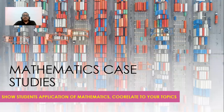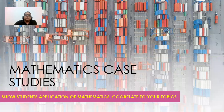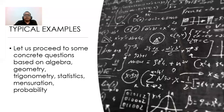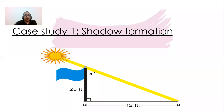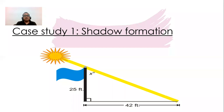Case studies are very important. I have prepared these especially for class 10 — any concept can be introduced through a case study. For example: shadow formation. Here is a vertical stick and the shadow formed is 42 feet. The shadow of a tree is this much — can you find the height of the tree? Students will use similar triangles and trigonometry to solve it.